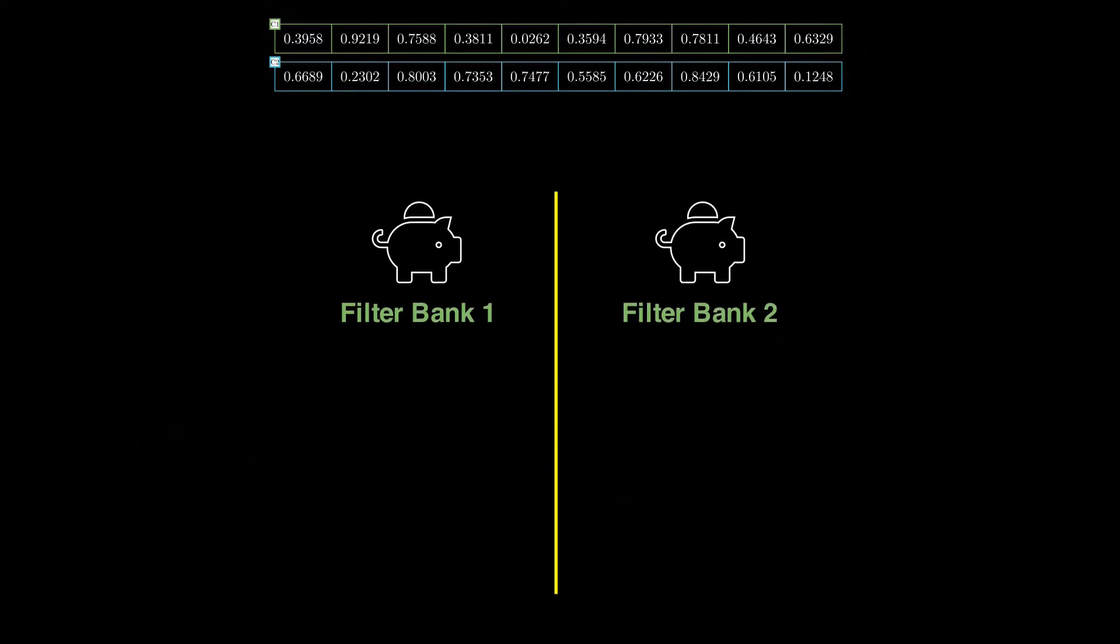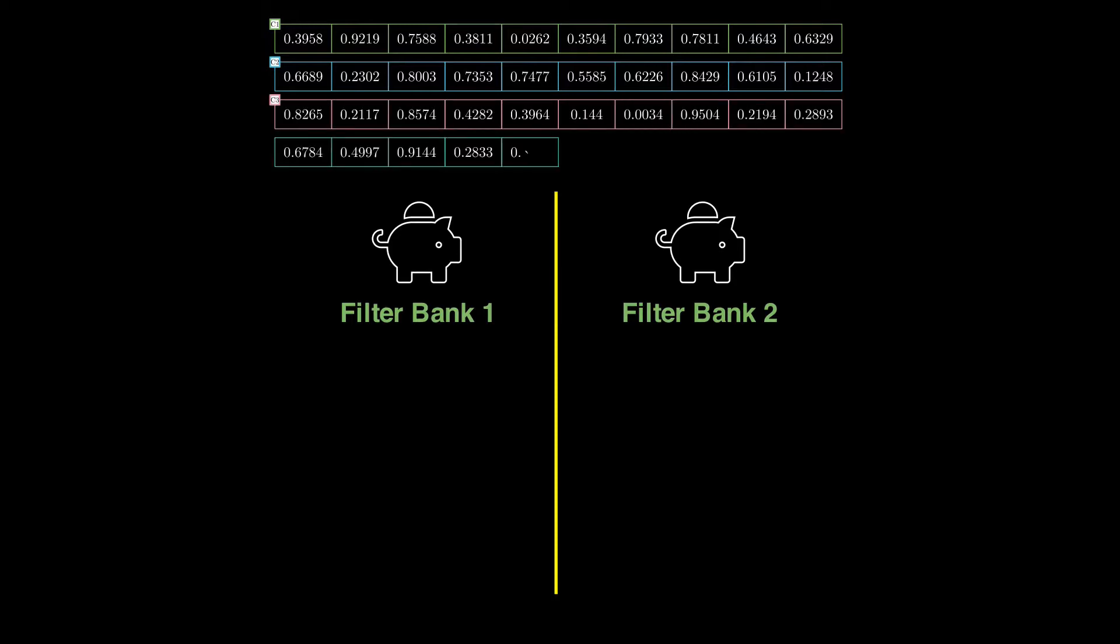Let me explain how grouped convolutions work by using more than two input channels. In this example, now I have created four channels C1, C2, C3 and C4. If we go by our regular rule, then in filter bank one, we will have four kernels, one for each input channel, and it would be the case for filter bank two as well.